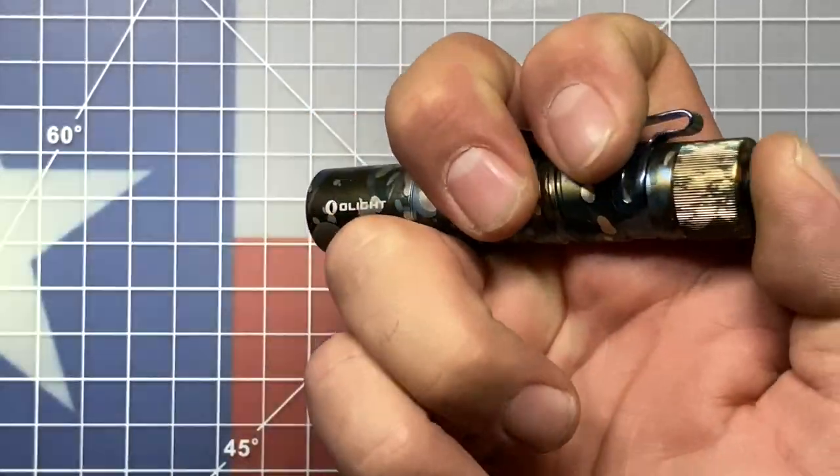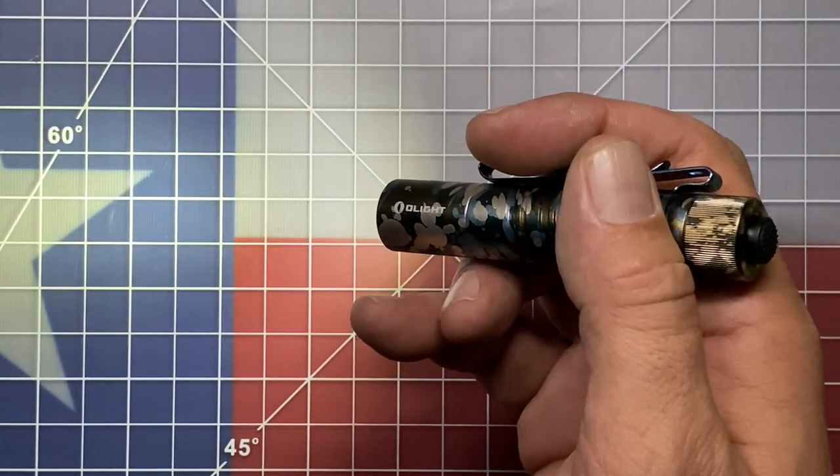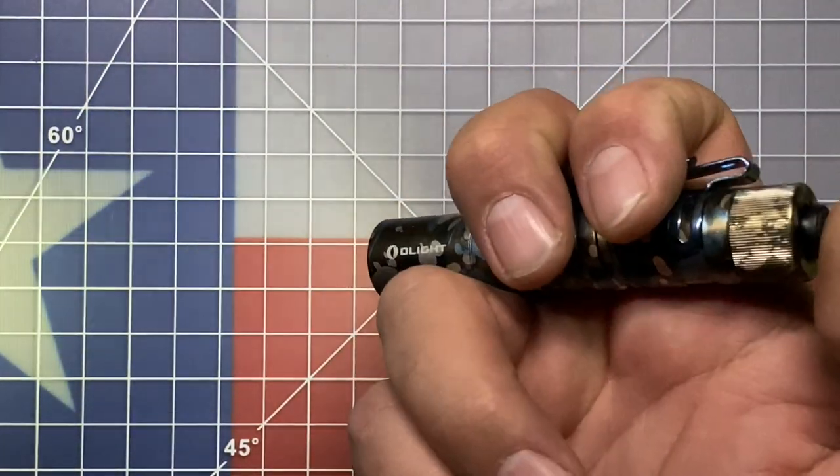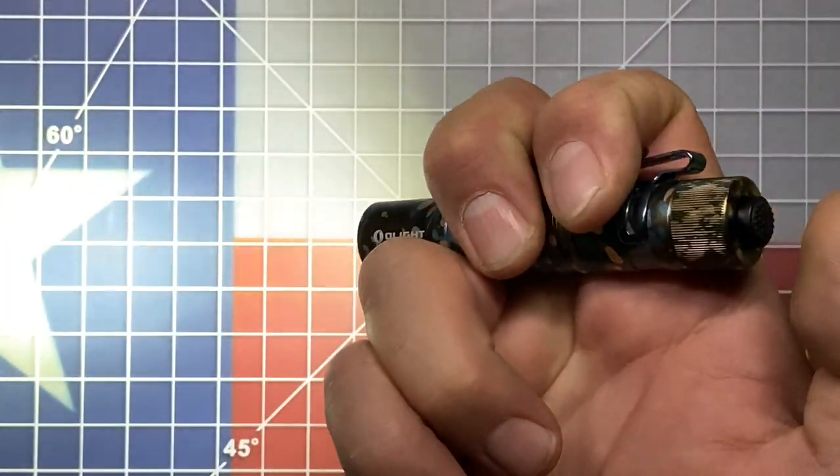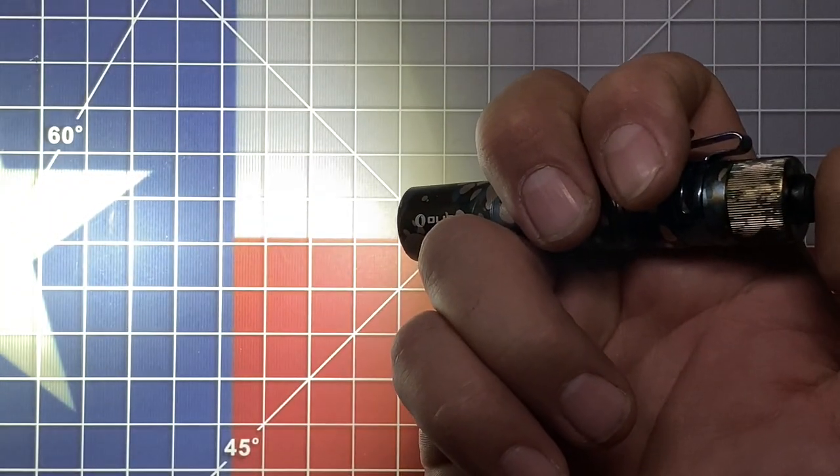Now to access your low mode, you can single press. That'll get you into your low mode. And then from there, if you want to get to your high mode, you will double click. So one, two, and that'll ramp up to your 300 lumen output mode.